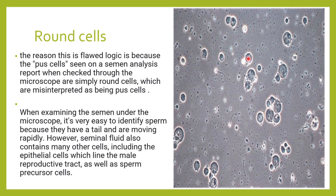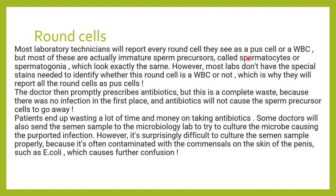That is why we put these cells under the category of round cells. Majority of lab technicians, when they see round cells, they report them as pus cells or WBCs. These immature germ cells will look similar to pus cells, and without special techniques or special stains it is not possible to identify WBCs or immature germ cells — so they cannot classify them properly.